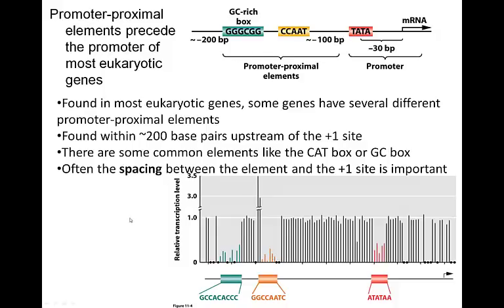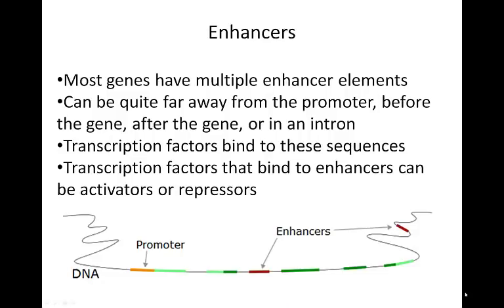Most eukaryotic genes have at least some promoter proximal elements — there are a number of different ones in addition to these two. They are all defined by their proximity to the normal promoter. Enhancers, on the other hand, can be quite a distance away from the gene.